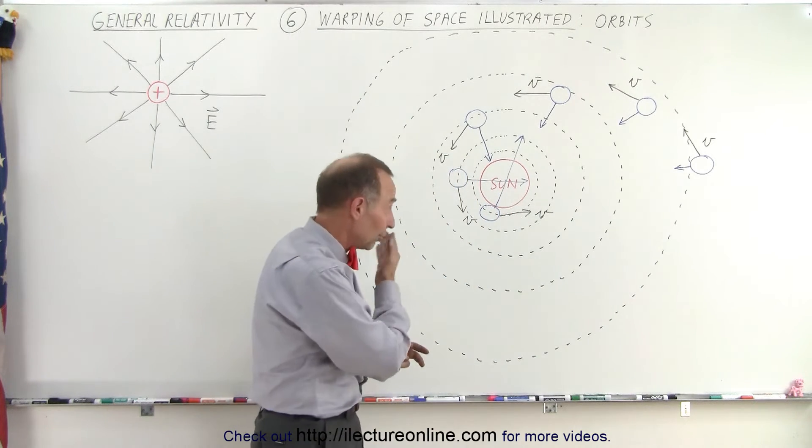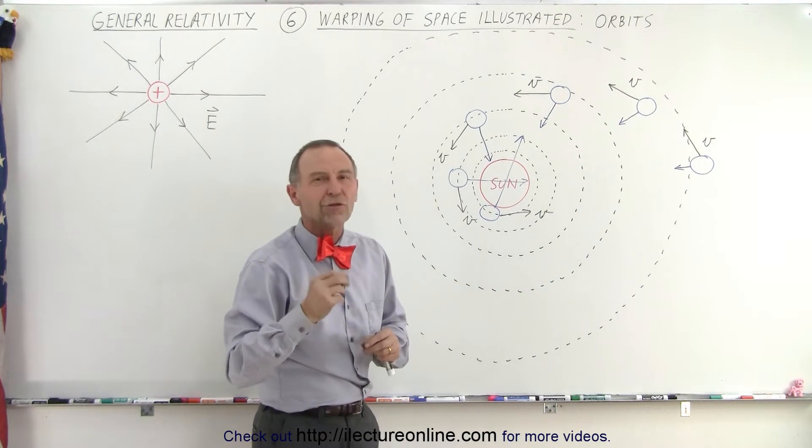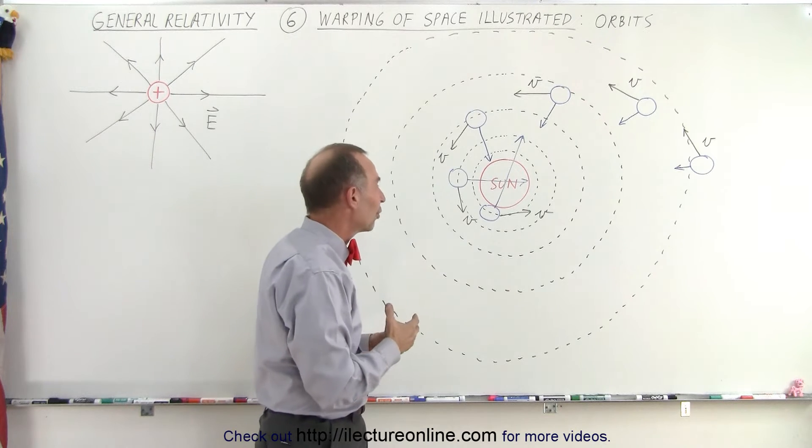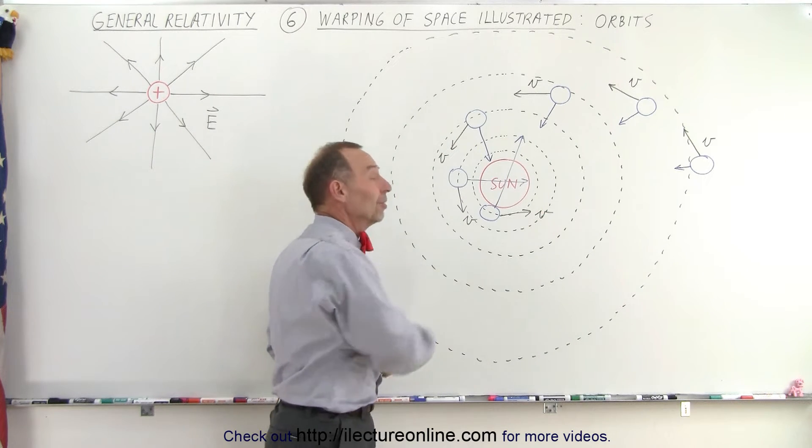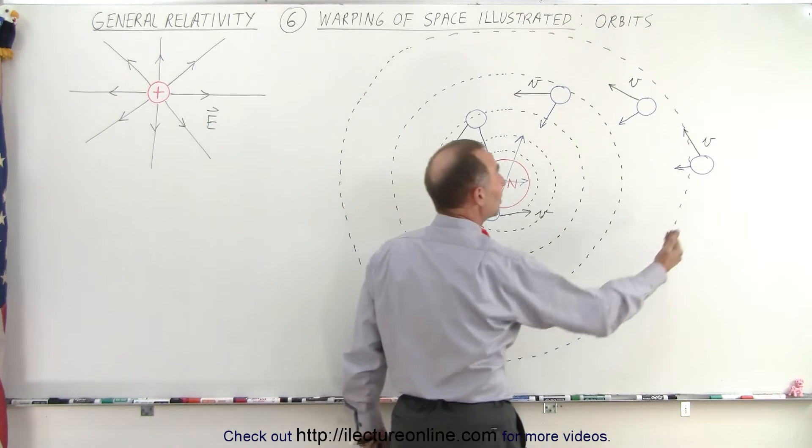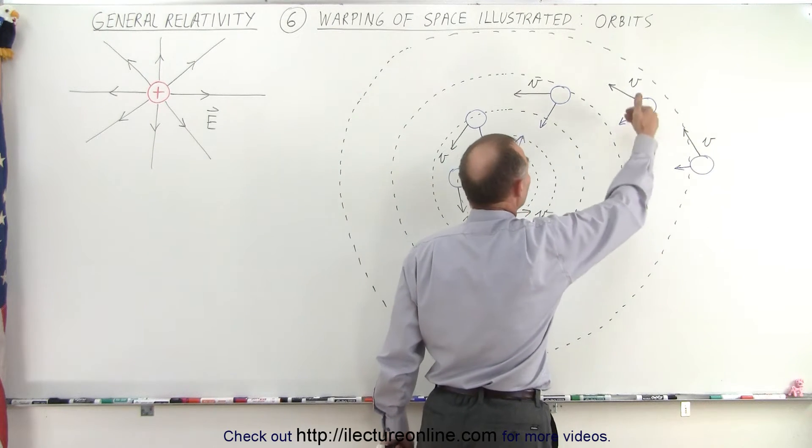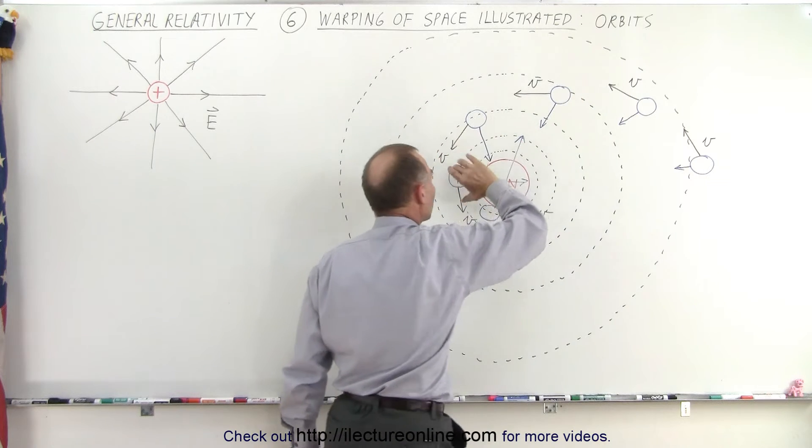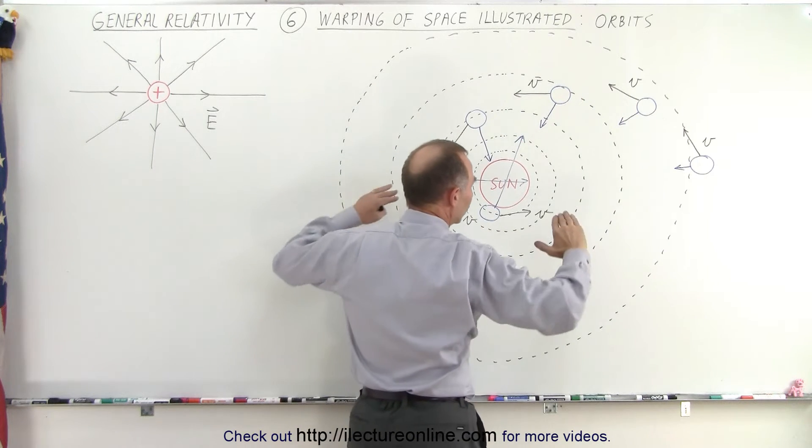Comets, once in a while, will actually go right into the sun. We call those kamikaze asteroids or comets because they just plunge right into the sun, of course, never to be seen again. Simply, the reason why they do that is because the curvature of space pulls them in. The force gets larger and larger as they get closer and space curves more and more.